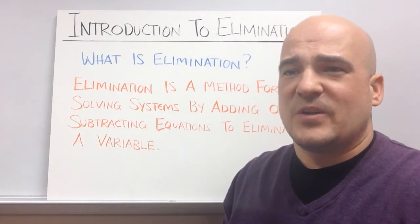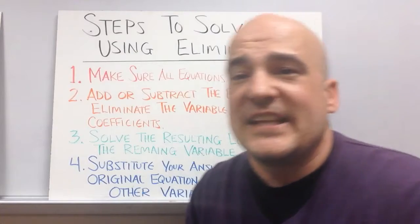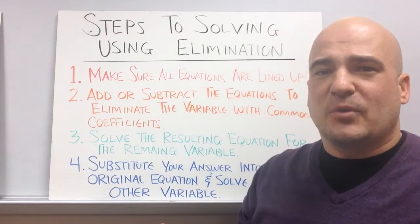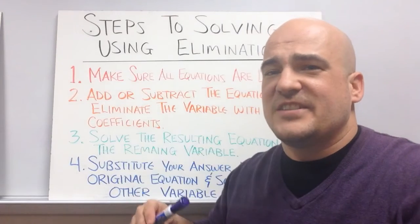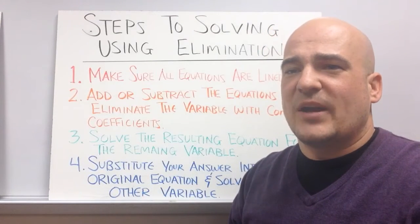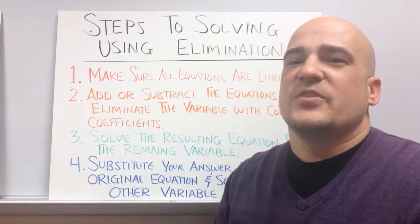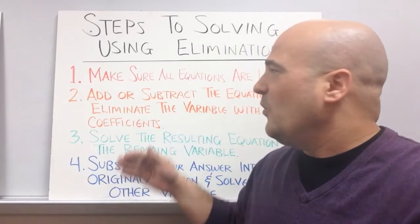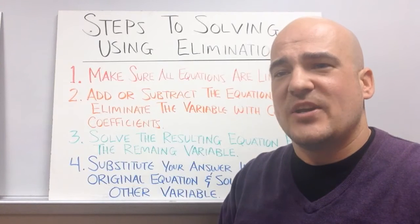So let me give you the steps on how we're going to solve these. The first thing you have to do — both of your equations are in standard form — you just have to make sure that the equations are lined up correctly. So you want your x's on top of your x's, your y's on top of your y's, and your constants on top of your constants. The second thing is you're going to add or subtract the equations so that you can eliminate one of the variables. Today we're going to focus only on adding the equations; we're not going to worry about subtracting yet, but pretty soon we'll be able to subtract equations also.